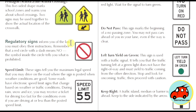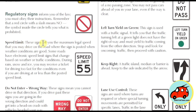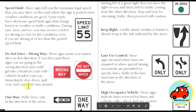Regulatory signs inform you of the law — you must obey their instructions. The red circle with a slash means no, and the symbol inside tells you what is prohibited. Speed limit signs tell you the maximum legal speed when weather conditions are good; some roads have electronic speed limit signs that change based on weather or traffic. During rain, snow, and ice, you may receive a ticket for driving too fast for conditions even if you're at or below the posted limit. Do not enter and wrong-way signs mean you cannot drive in that direction — if you pass them, you're going the wrong way and could cause a head-on crash. Immediately slow down, pull over, and cautiously turn around.